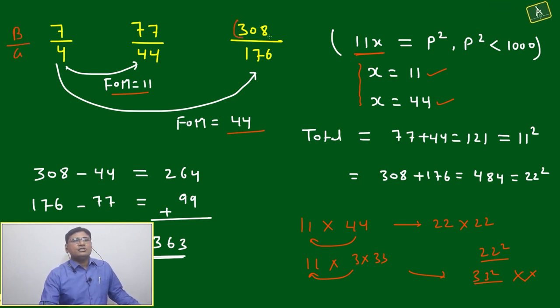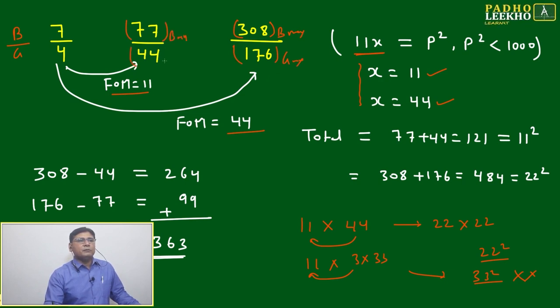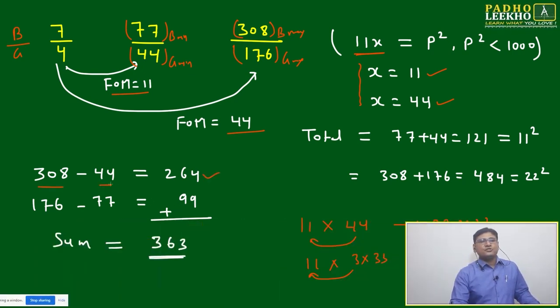Then this is your boy maximum and this is your girl maximum. This is your boy minimum and this is your girl minimum. Now we have to take the difference. Maximum boys minus minimum girls, 308 minus 44 = 264. Maximum girls minus minimum boys, 176 minus 77 = 99.